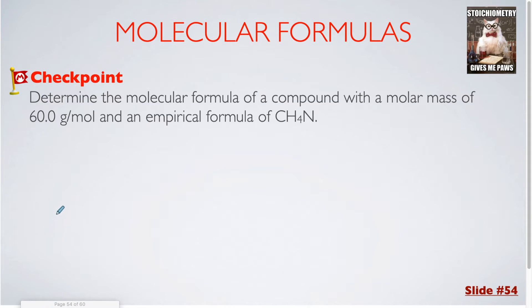In our first checkpoint question we are given the empirical formula. So we know the empirical formula is CH4N. If I were to add up the molar mass for each of these atoms, I would get 30.03. So that's the molar mass of my empirical formula.